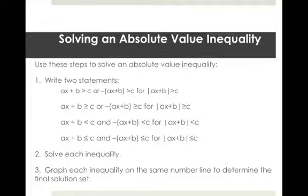So what you end up with is AX plus B greater than C, or the opposite, negative quantity AX plus B greater than C, for absolute value of AX plus B greater than C. If you have greater than or equal to, it's the same kind of deal: AX plus B greater than or equal to C, or negative AX plus B greater than or equal to C. So it's 'greater' → 'or'.